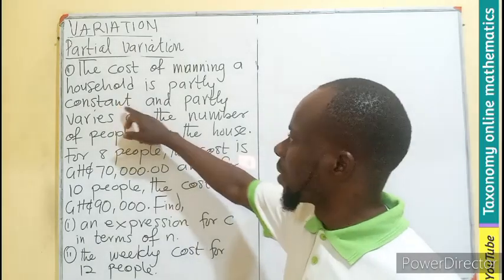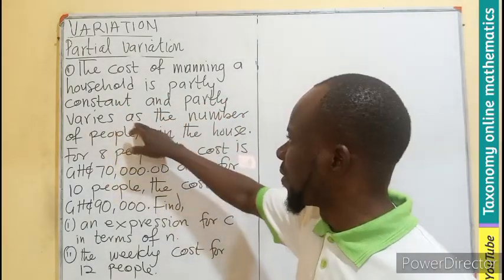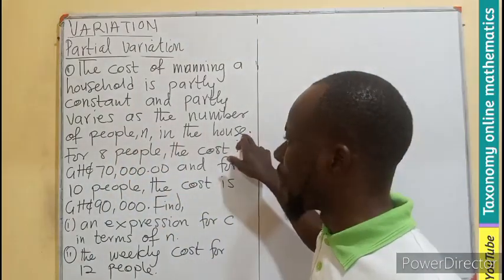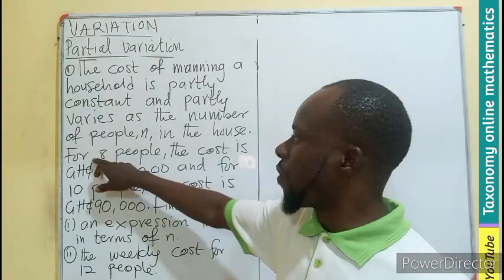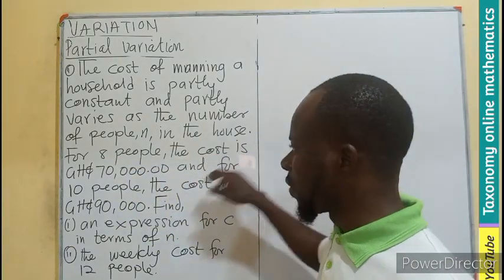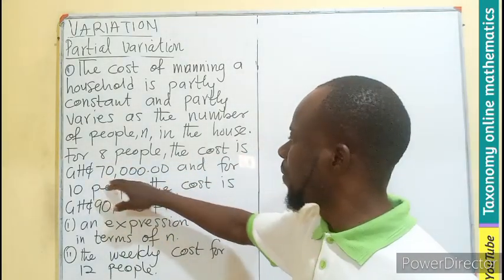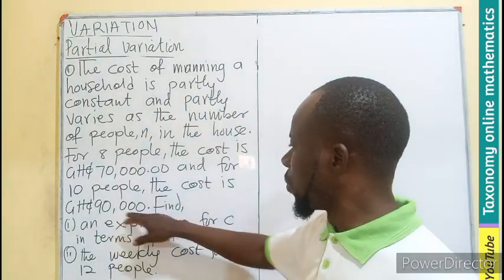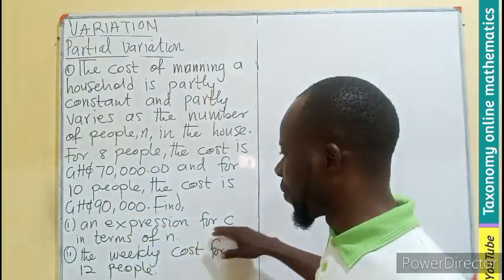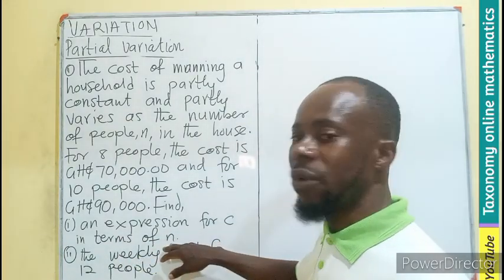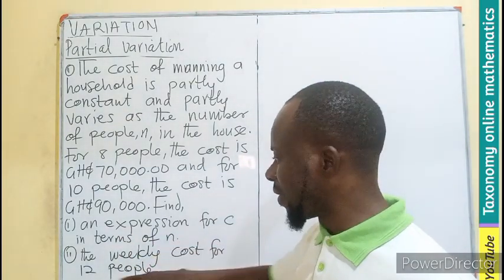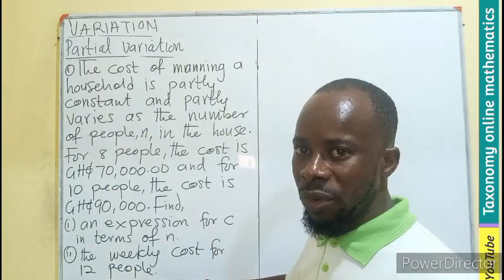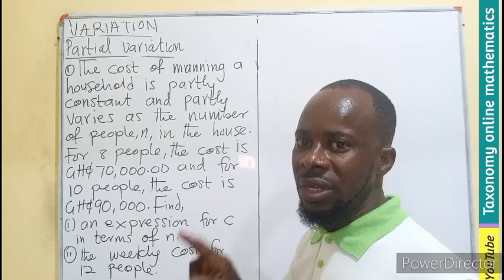The cost of manning a household is partly constant and partly varies as the number of people in the house. For 8 people the cost is 70,000, and for 10 people the cost is 90,000. We have to find an expression for C in terms of n.